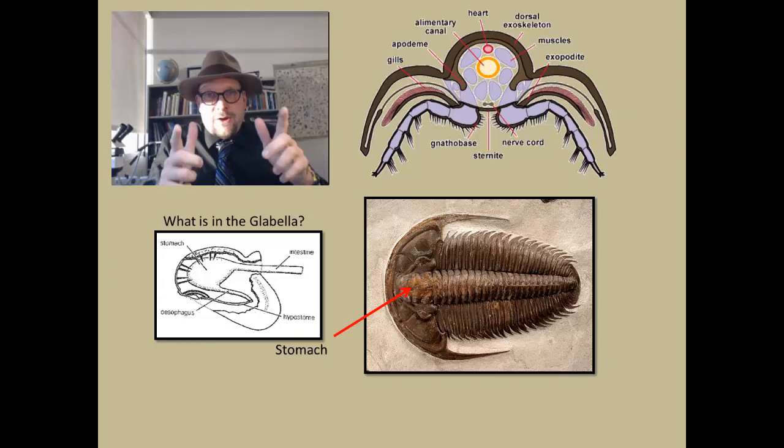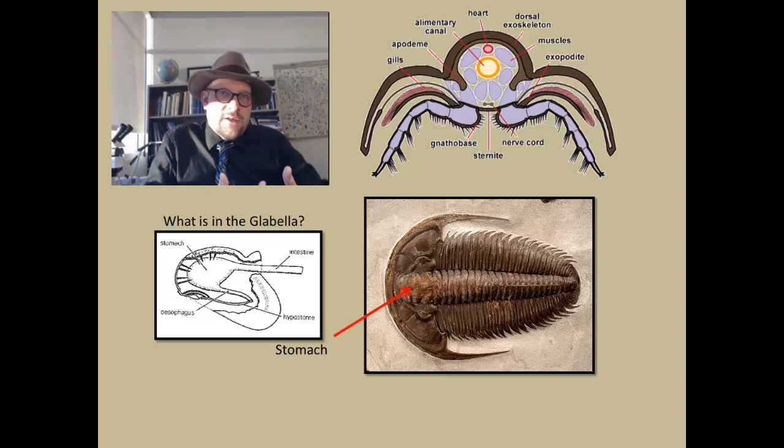Now the anatomy of trilobites is a little bizarre. That bumpy thing on the front of the head is not the nose, but it is the stomach, and that is called the glabella. It actually holds an expansion of the gut tube, so it holds a stomach, and then it has the mouth opening on the ventral side of the trilobite.